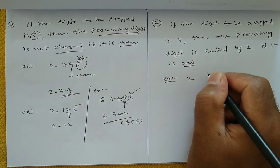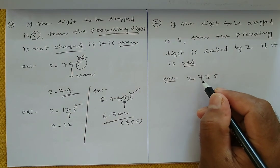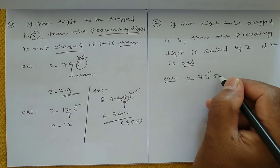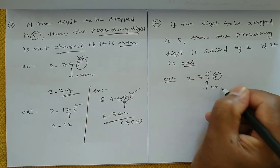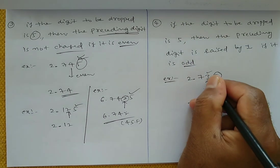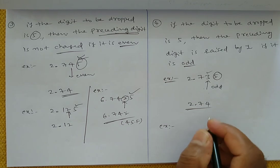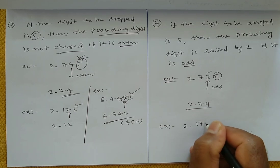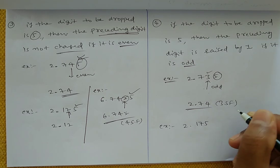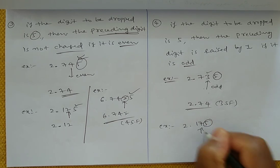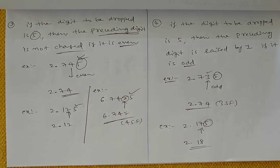Rule 4: if the digit to be dropped is 5 and the preceding digit is odd, then the preceding digit is raised by 1. For example, 2.735 — we want to round off to 3 significant figures. The dropped digit is 5, and the preceding digit 3 is odd, so 3 increases by 1, giving 2.74. Another example: 2.175, round off to 3 significant figures. Here 5 is dropped and 7 is odd, so the answer is 2.18.